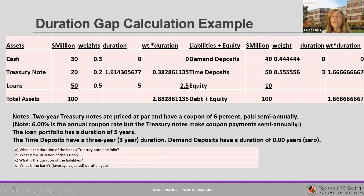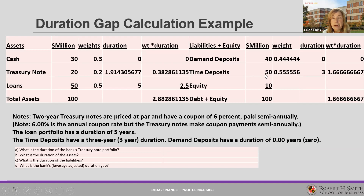Now let's look at the duration of the liabilities. We assume the duration of demand deposits is zero, and the duration of time deposits is three years. The weights are calculated over total liabilities only — equity is not a liability. With $10 million in equity, there is $90 million in liabilities. The weight of demand deposits is 40/90 = 0.444, and the weight of time deposits is 50/90 = 0.556. Zero times anything is zero; three times 0.556 is 1.6667. Summing these gives a duration of liabilities of 1.6667.